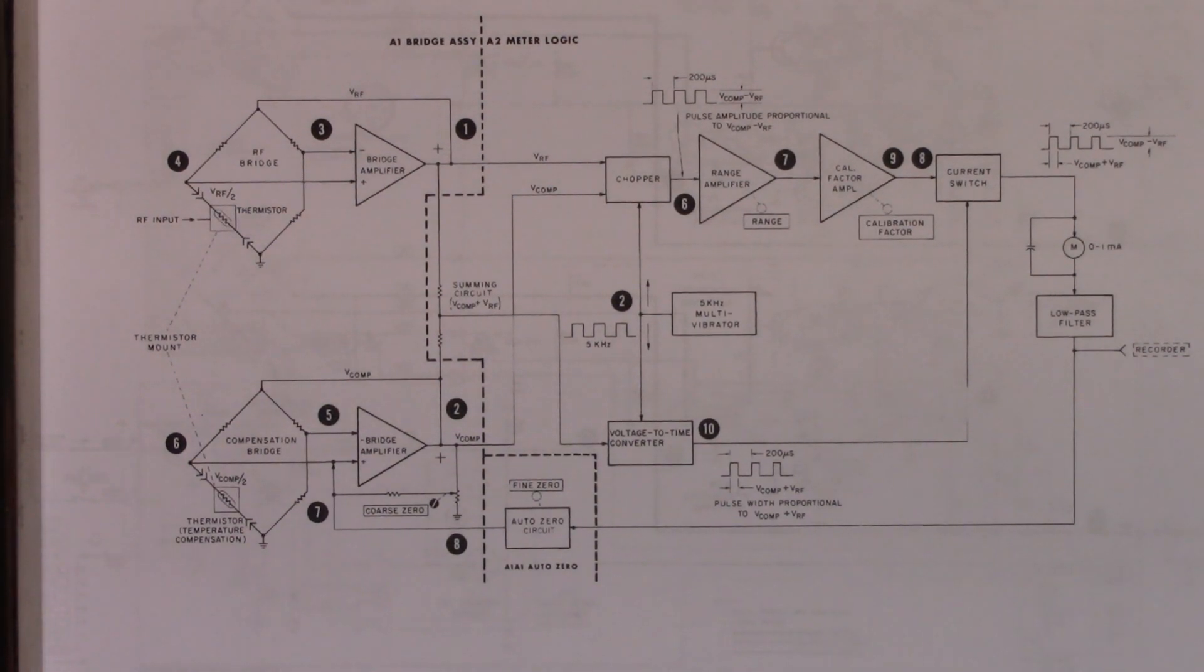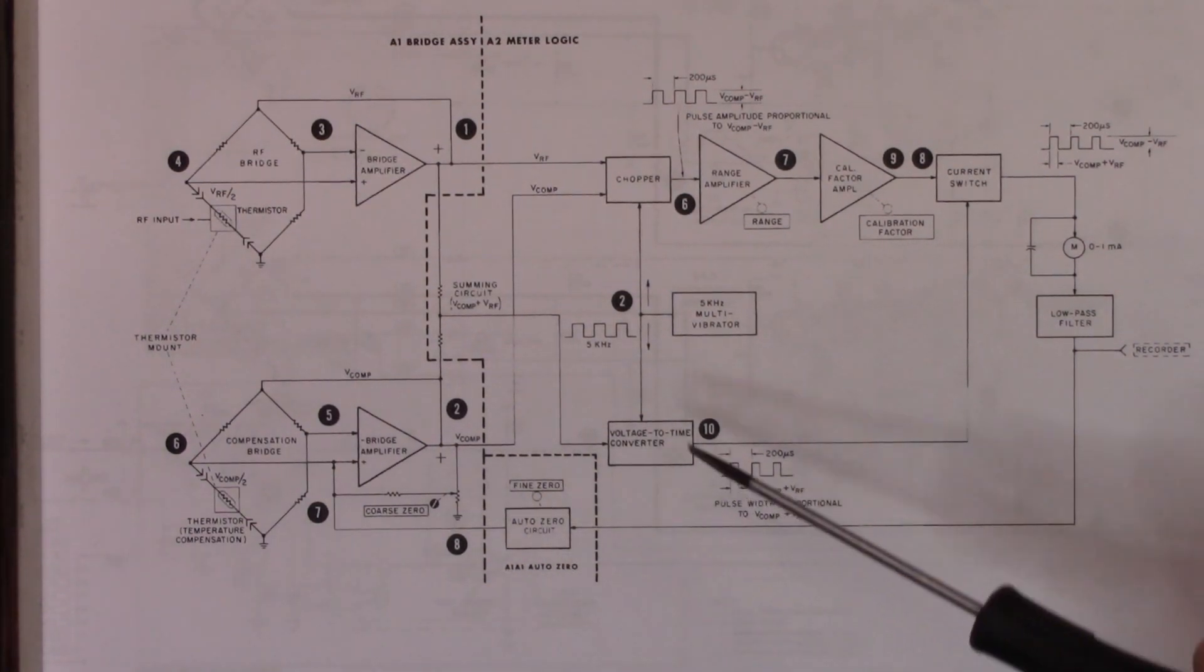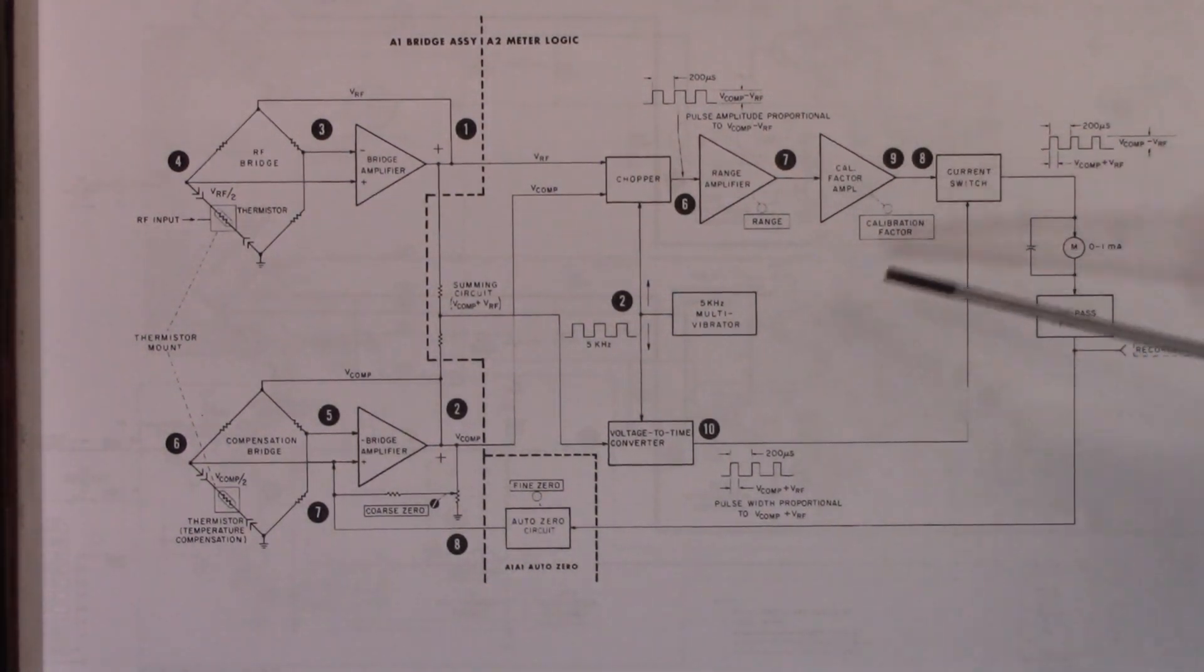Okay. Well, here is a slightly more detailed block diagram. You can see the same basic components, the RF, the compensation bridge, where they're brought together, chopped, combined, and then the resultant pulse signal filtered and presented on the meter.